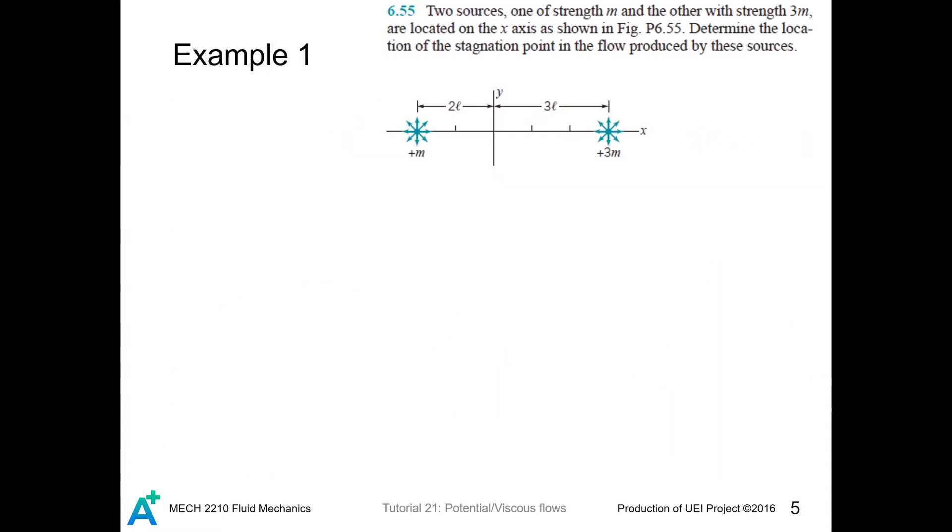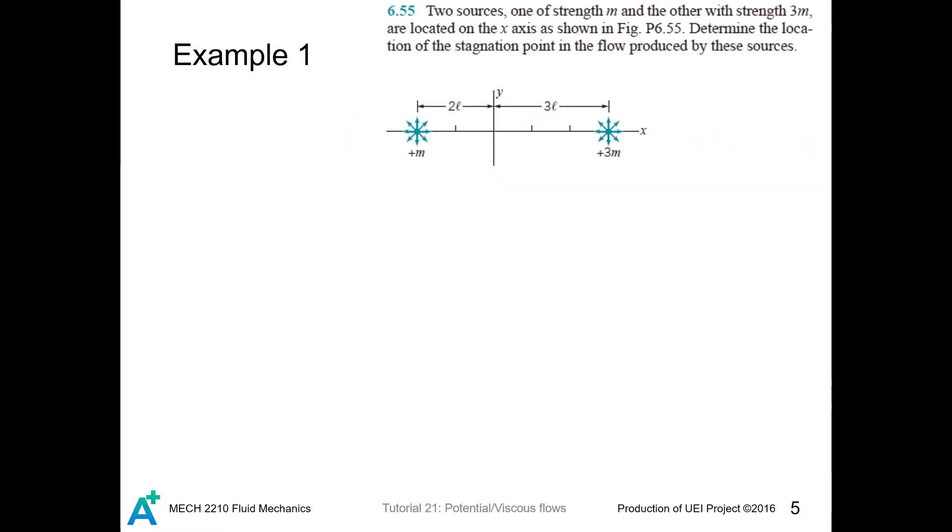Now let's do a quick example. Any stagnation point must lie on the x axis. Pick any point not on the x axis, say this point, and the velocity contributed by this source goes this way. Then, this point and any other point not on the x axis must have a y component of velocity. So any point with zero velocity must lie on the x axis. Now, for any point on the x axis, the velocity contributed by this guy is...